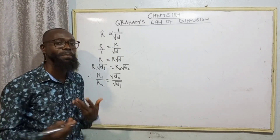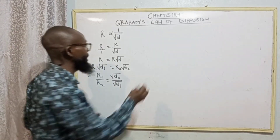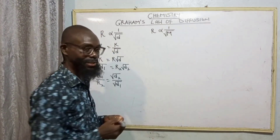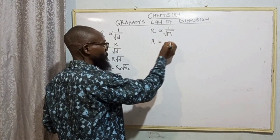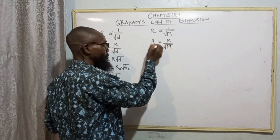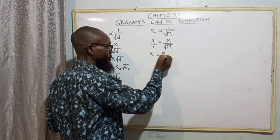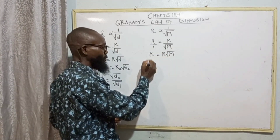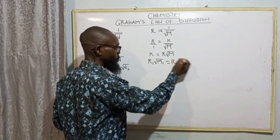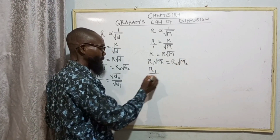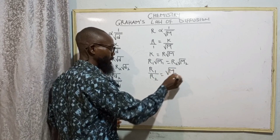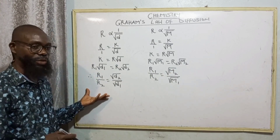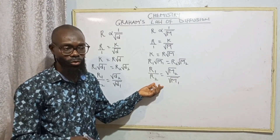We now compare the rate of diffusion to the mass of the gas. We can say rate of diffusion is inversely proportional to the square root of its relative molecular mass. Let M represent relative molecular mass. R equals K over square root of M. So K equals R times square root of M. When we consider having two gases, R1 times square root of M1 equals R2 times square root of M2. Then R1 over R2 equals square root of M2 divided by square root of M1. This is another formula for calculating rate of diffusion — the first using density, the second using relative molecular mass.